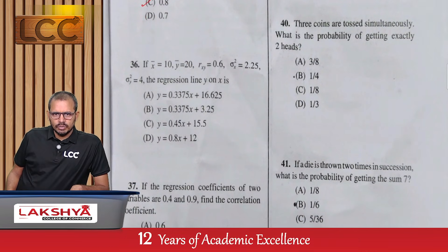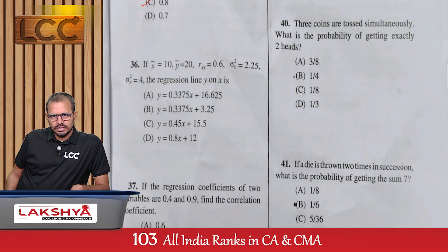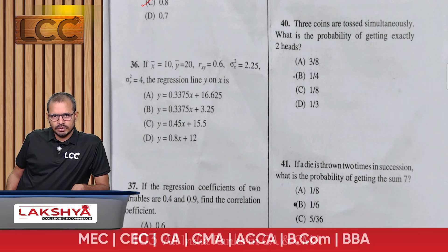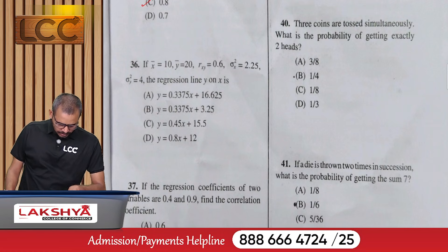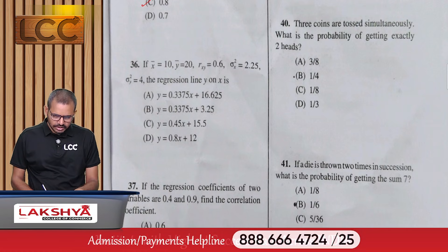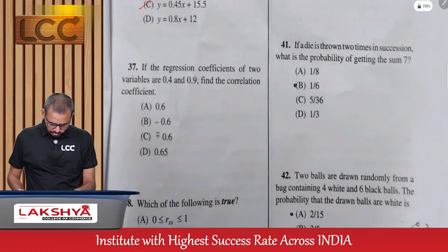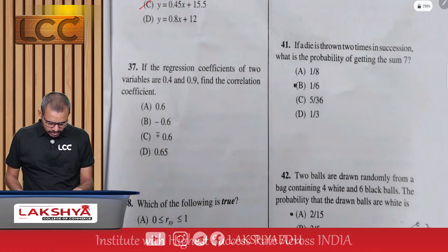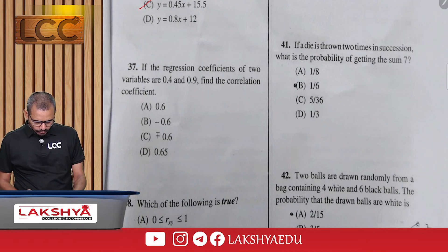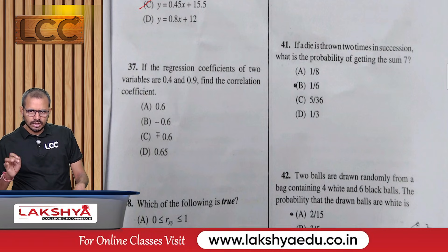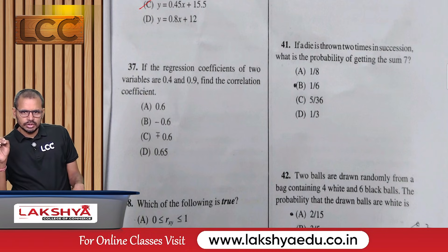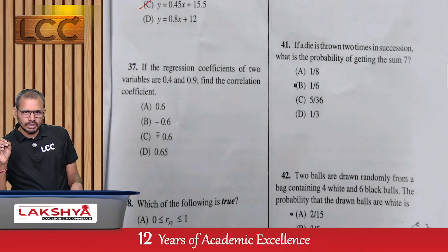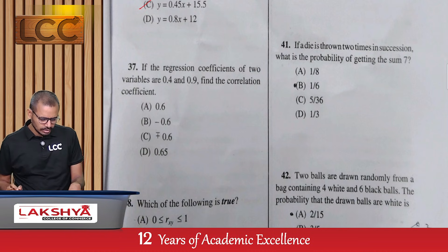Question 36: Given x̄ = 10, ȳ = 20, r(x,y) = 0.6, σx² = 2.25, σy² = 4, find the regression equation of y on x — option C. Question 37: If the two regression coefficients are 0.4 and 0.9, find the correlation coefficient — option A.